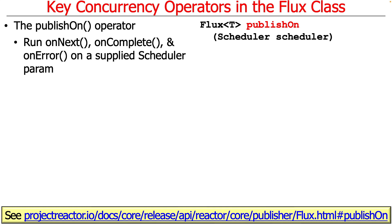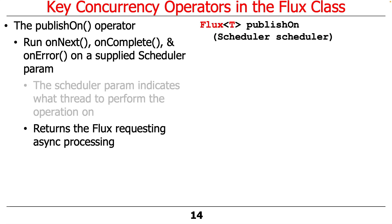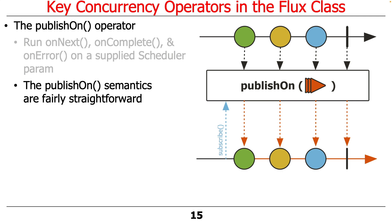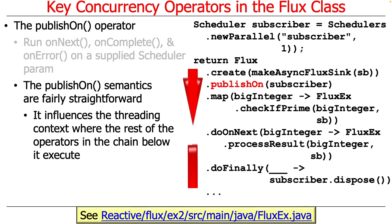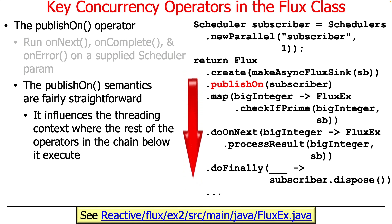subscribeOn really only makes sense when you start looking at more detailed examples, which we will do shortly. The publishOn operator is a little bit more clear — it runs the onNext, onComplete, and onError hook methods in the supplied scheduler parameter. Again, you give it a scheduler and that indicates what thread or threads to perform the operator on. It returns a flux that requests asynchronous processing, and mercifully the publishOn semantics are pretty straightforward: from publishOn downwards — not before, but downwards — it runs operators in the scheduler context indicated by the parameter passed to publishOn.